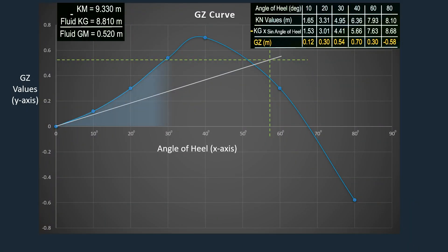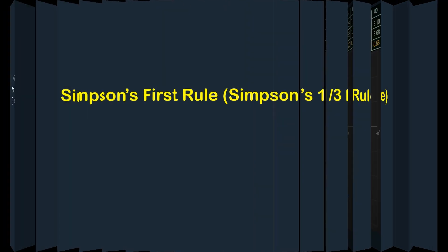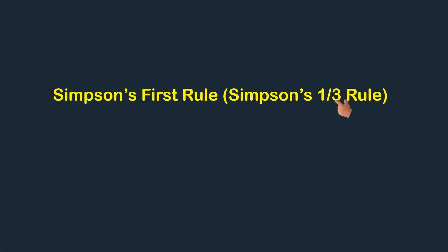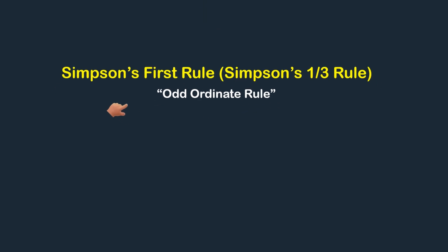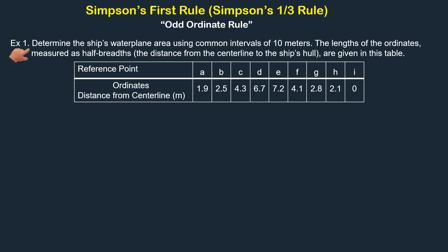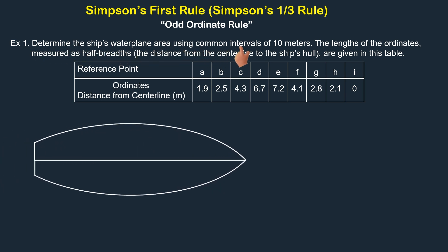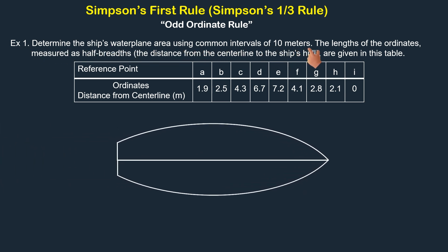Before we proceed with calculating the area under this GZ curve at a given angle of heel, let me first explain Simpson's First Rule, also known as Simpson's One-Third Rule, which is often referred to as the odd ordinate rule. Let's consider this example: determine the ship's waterplane area using common intervals of 10 meters. The lengths of the ordinates, measured as half-breadths — the distance from the centerline to the ship's hull — are given below.